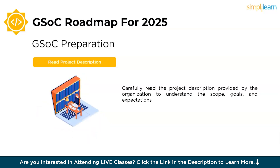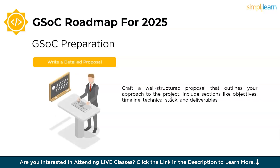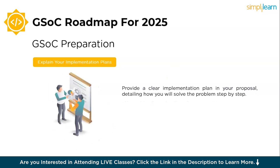Read the project description carefully to understand the scope, goals, and expectations. Identify key deliverables, technologies required, and any specific challenges mentioned to align your approach with the requirements. Next, write a detailed proposal with your approach. Craft a well-structured proposal that outlines your approach to the project. Include sections like objectives, timeline, technical stack, and deliverables. Highlight your understanding of the project by breaking it into milestones and explain how you plan to achieve each step. Provide a clear implementation plan detailing how you will solve the problem step by step, mentioning the tools, frameworks, and resources you will use. A detailed plan shows mentors that you are prepared and committed to completing the project successfully.